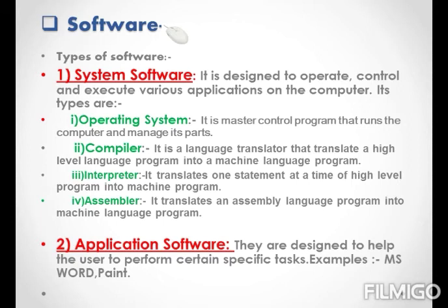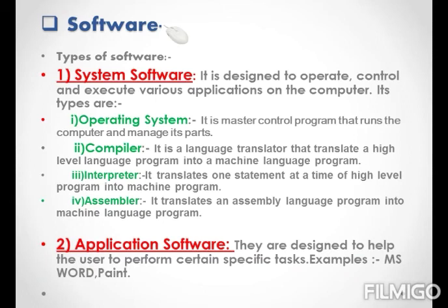The next is a compiler. A compiler is a language translator that translates a high level language program into a machine level language program; it resides inside the computer. The next is an interpreter. An interpreter translates one statement at a time of a high level program into a machine program. The next is an assembler. An assembler translates an assembly language program into a machine language program. The next type is application software, which is designed to help the user perform certain specific tasks. Some common examples of application software are MS Word, Paint, etc.